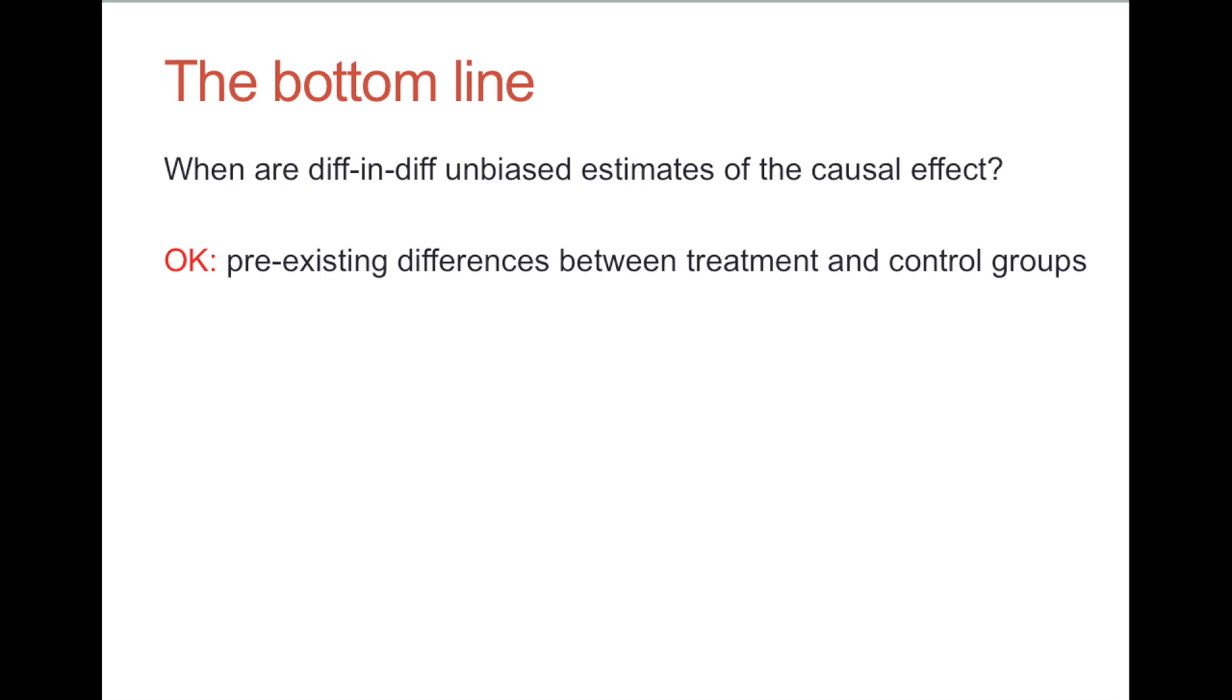Now on the other hand, what if Sao Paulo and Rio were the same in 2009, but the policy team decided to run the program in Sao Paulo because they knew a free lunch program was being implemented in Rio already, and they didn't want to conflict with it? Well, that's not okay. If we have reason to believe the trends unrelated to the program might not be the same in the two groups, then the diff-in-diff estimate will give you the wrong answer.